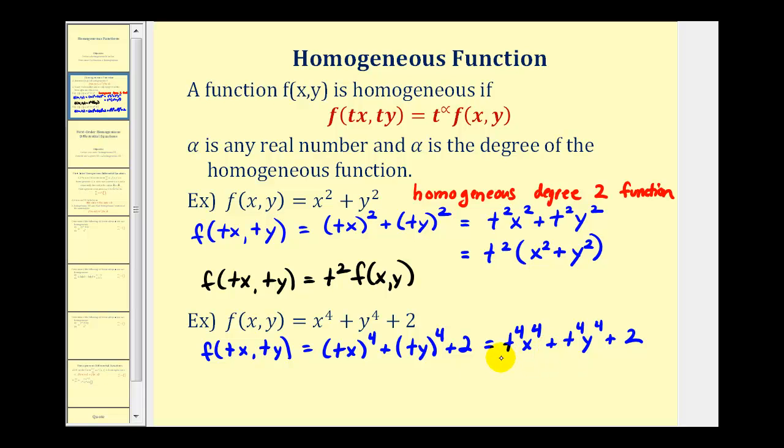Notice how the first terms do have a common factor of t⁴, but the third term doesn't have any factors of t. Since we can't factor the t's out, we can't write this as t to some power times the original function because of this 2 here. Therefore, the given function is not homogeneous.